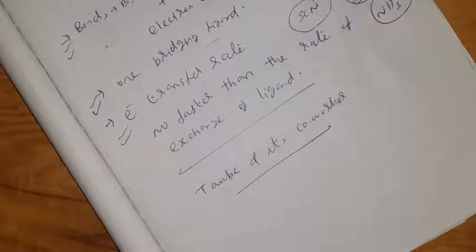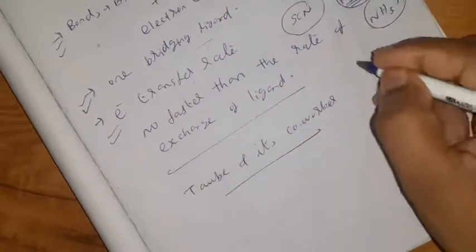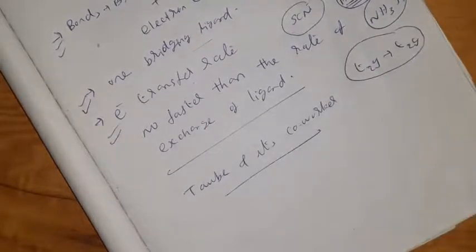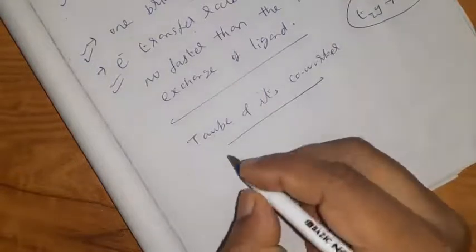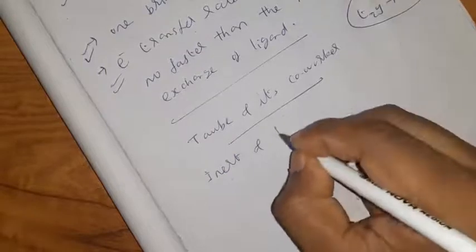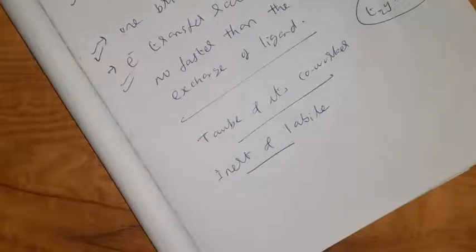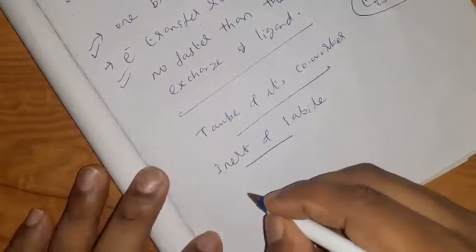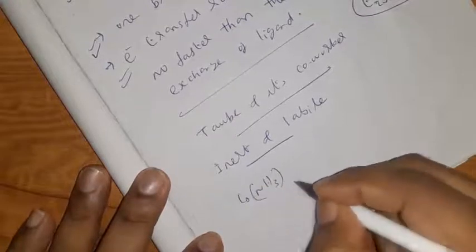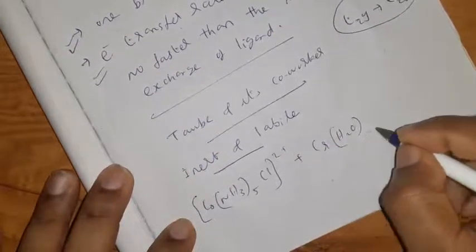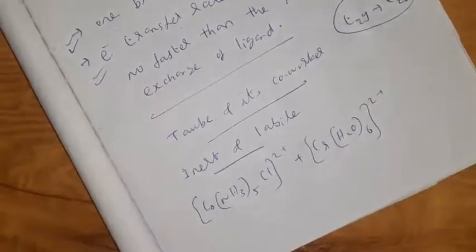For the outer sphere type, we have two types. For the inner sphere type, an example reaction is: Cobalt(NH3)5Cl²⁺ plus Chromium(H2O)6²⁺. This complex is a Taube example and cobalt here is stable (inert).